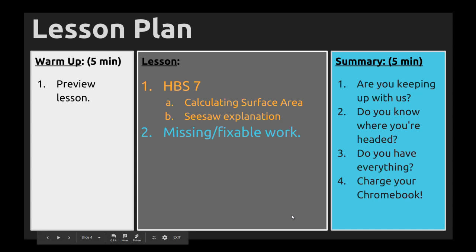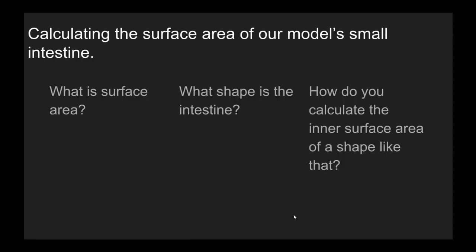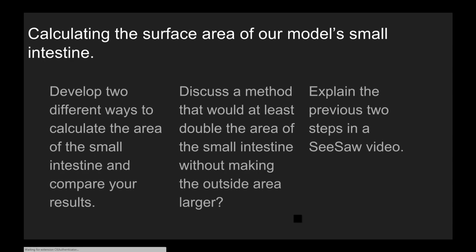We'll talk more about that in a second, and make sure you're aware of any missing or fixable work. In order to do this, we need to make sure you understand what surface area is, what is the shape of the intestine, and how you calculate the inner surface area of a shape like that. Once we've got the math down, you can move on to your actual task: develop two different ways to calculate the area of the small intestine, and be sure to compare your two results to get a better idea of how realistic or consistent your math is.